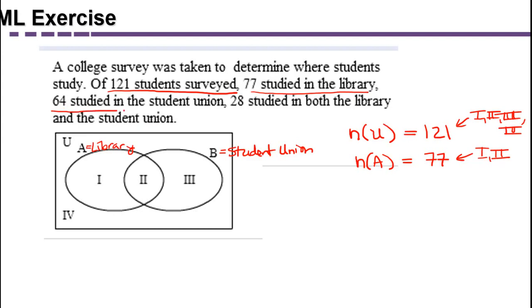And then the next fact we know is that 64 studied in the student union. So that's referring to the number in the set B, which is comprised of regions 2 and 3.